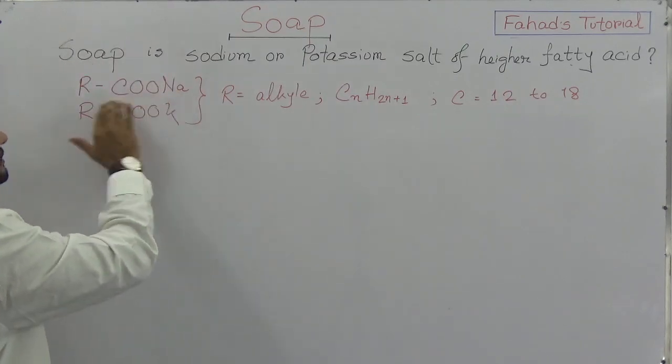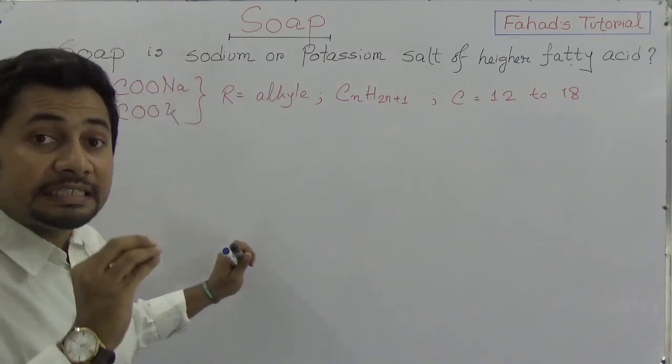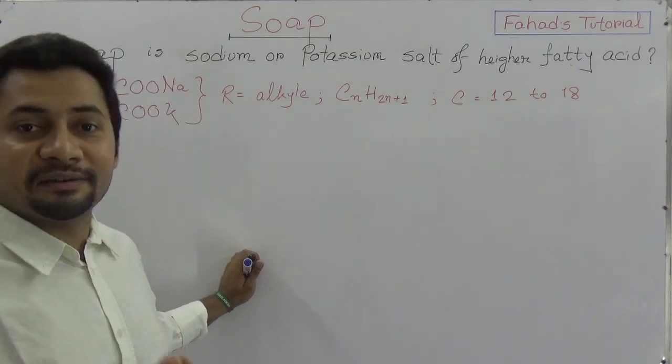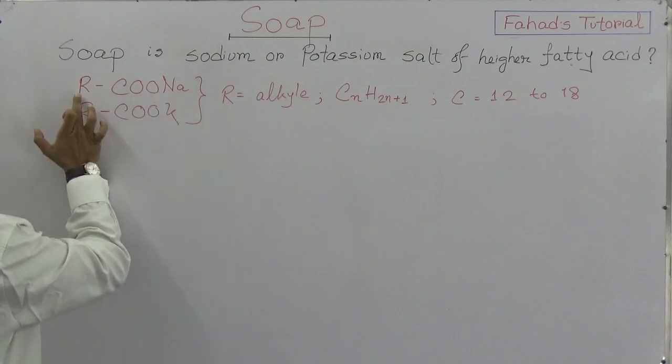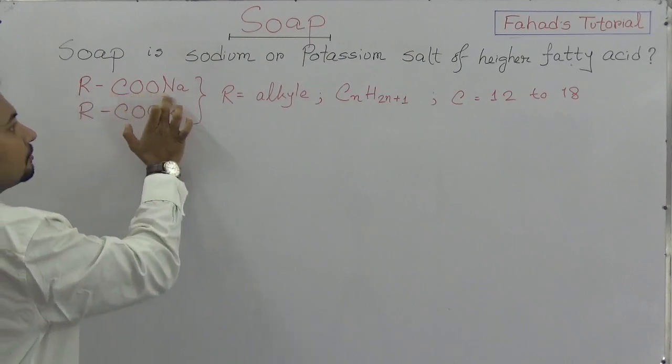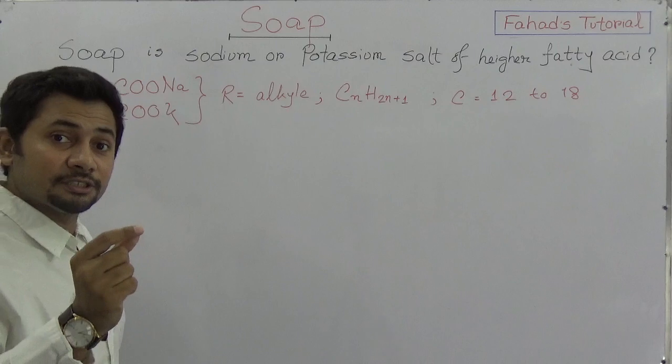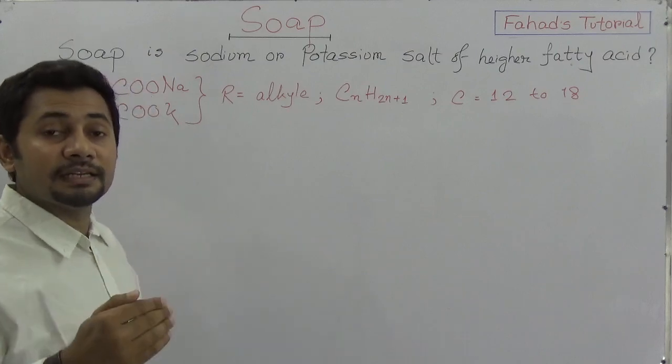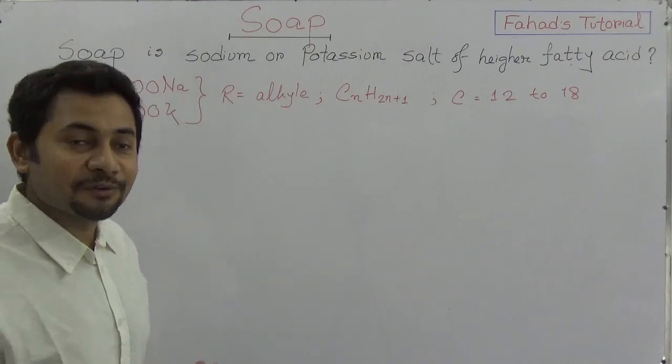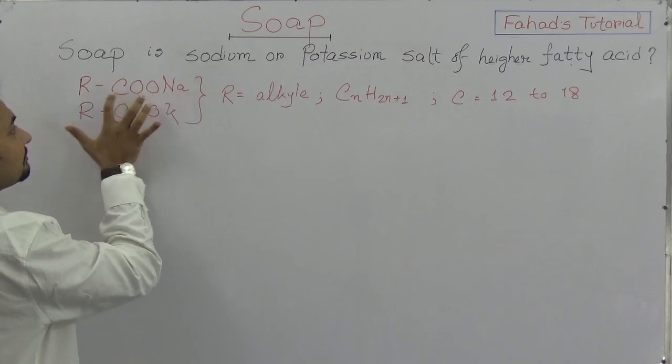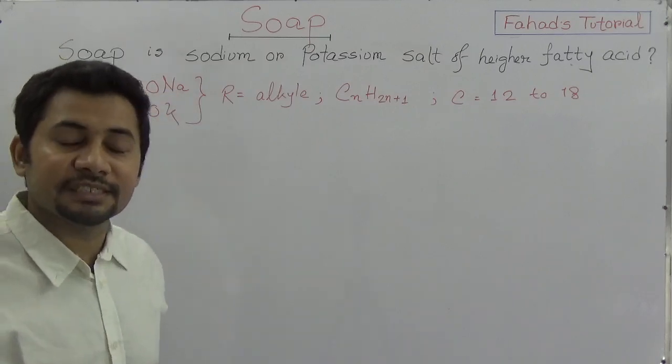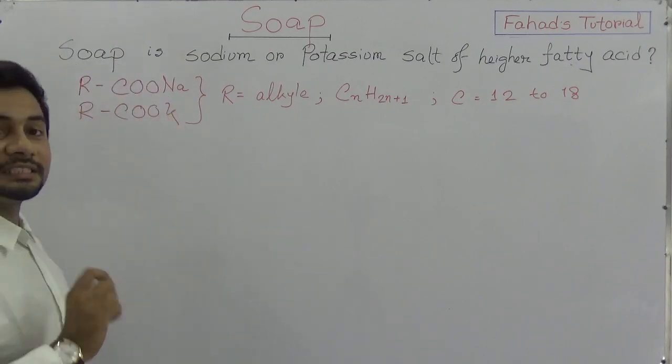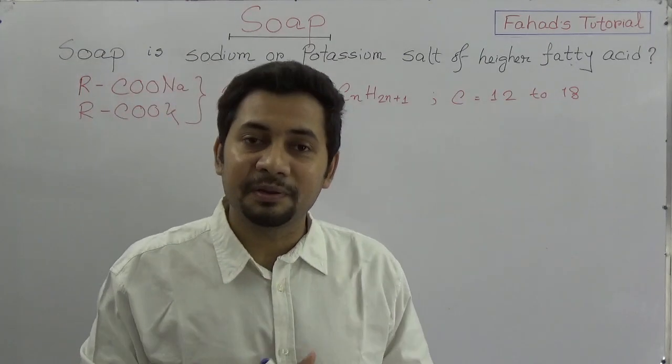The chemical name of soap is sodium stearate or potassium stearate. The formula is R-COONa. If caustic soda is used with oil in producing soap, we call it sodium stearate. If potassium hydroxide is used, we call it potassium stearate.